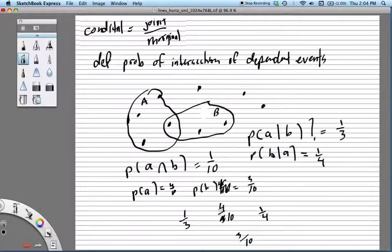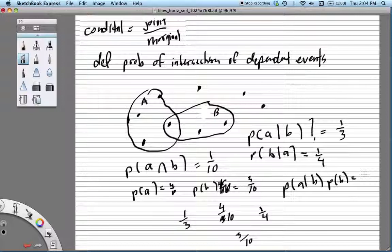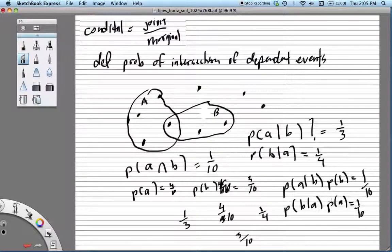Well, clearly we can see that if we had taken the probability of A given B and multiplied by the probability of B, that would do it. And at the same time, we could have taken that the probability of B given A times the probability of A is also equal to one-tenth. So this is nice. This is the relationship that we want, is that all of these guys are equal. The probability of A and B is the same as the probability of A given B times the probability of B, which is the same as the probability of B given A times the probability of A.